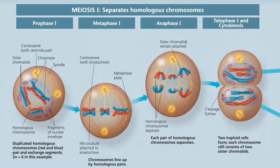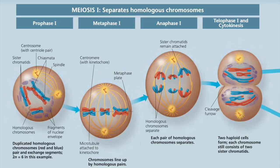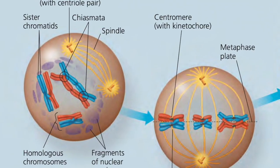Meiosis is divided into meiosis 1 and meiosis 2. Each phase — prophase, metaphase, anaphase, and telophase — is called prophase 1, metaphase 1, anaphase 1, telophase 1, and similarly for meiosis 2. In prophase 1, a lot of standard things happen: the nucleus begins to dissolve, spindle fibers form, and chromosomes condense, with sister chromatids being joined and homologous chromosomes forming a single chromosome.